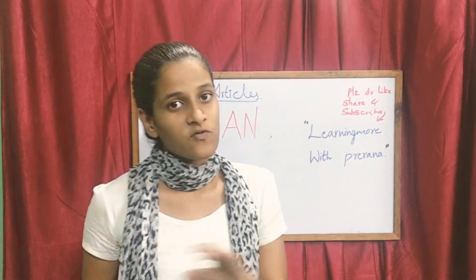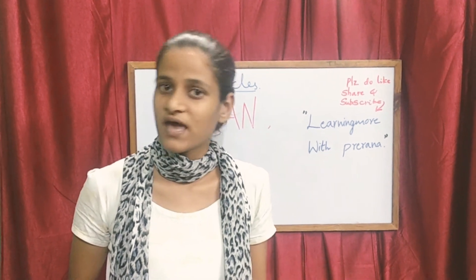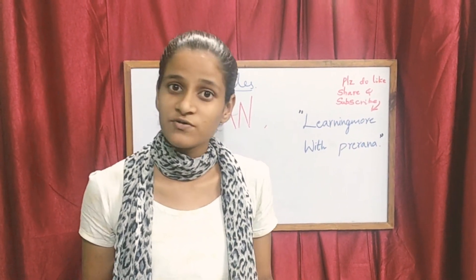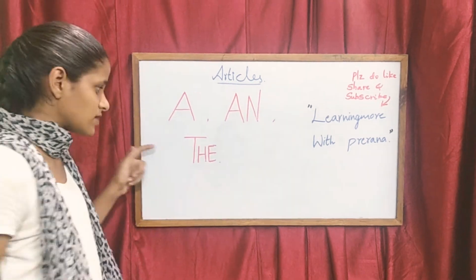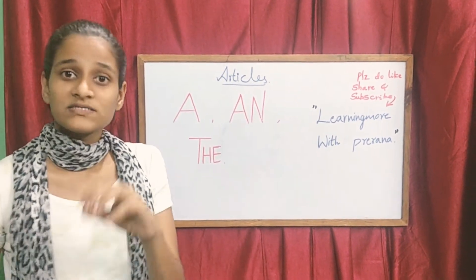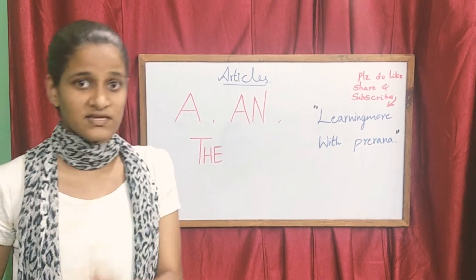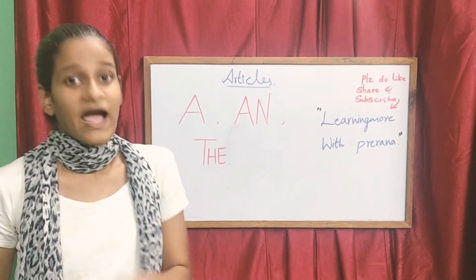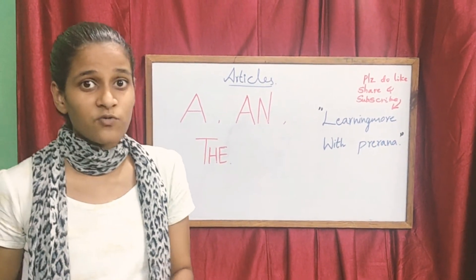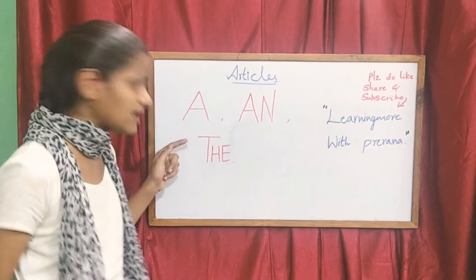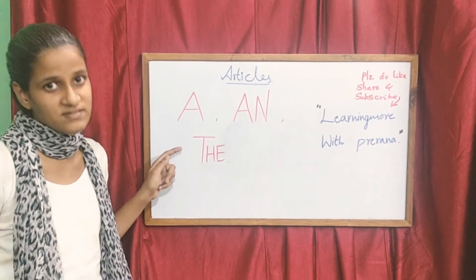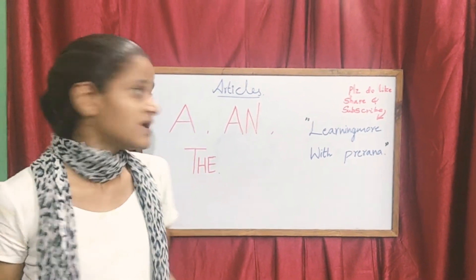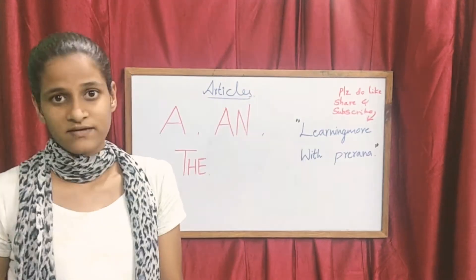For vowels you should use 'an,' and for consonants you should use 'a.' You should use the word 'the' for specific things like the mountains, the ranges, etc. I will be telling you what are the rules you should apply to use the article 'the.' But before that, let us see about 'a' and 'an.'